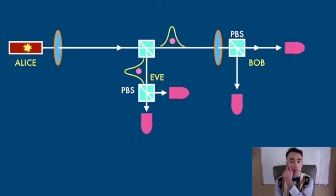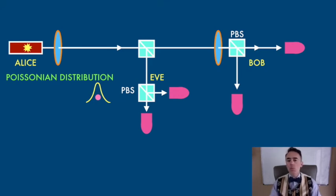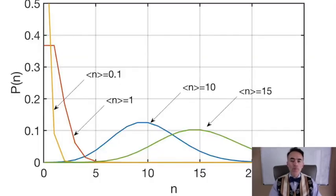But pulsed lasers emit in a Poissonian distribution. In a Poissonian distribution, the probability that one pulse contains n photons is given by the mean photon number to the power of n over n factorial times e to the power of minus the mean photon number. The higher the mean photon number, the more likely to have several photons in one pulse, so this bell-like curve shifts to the right.